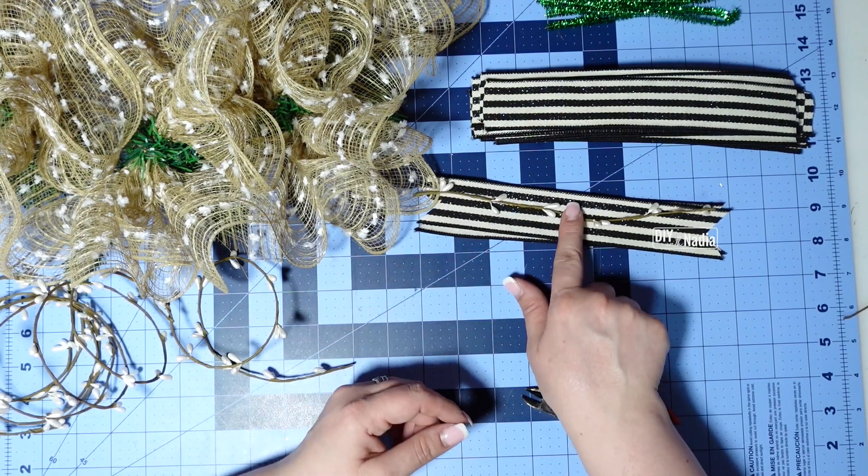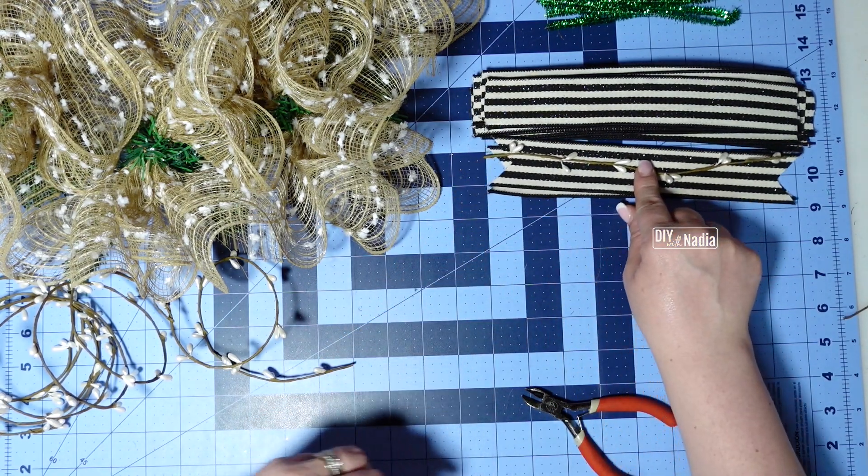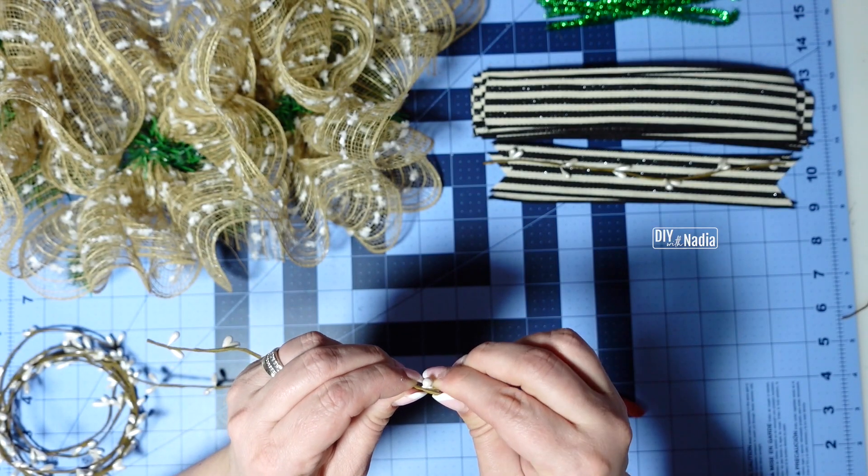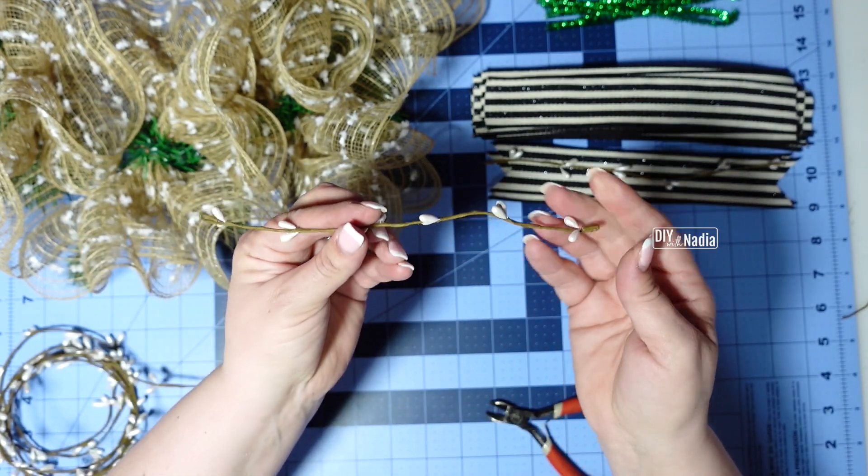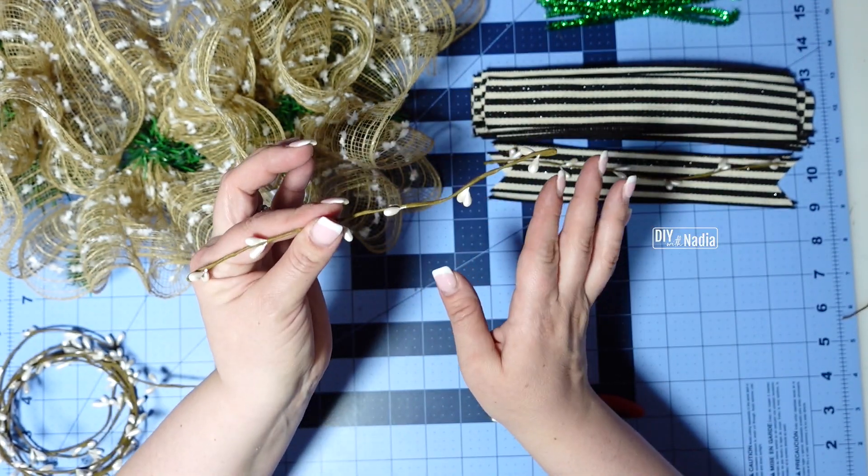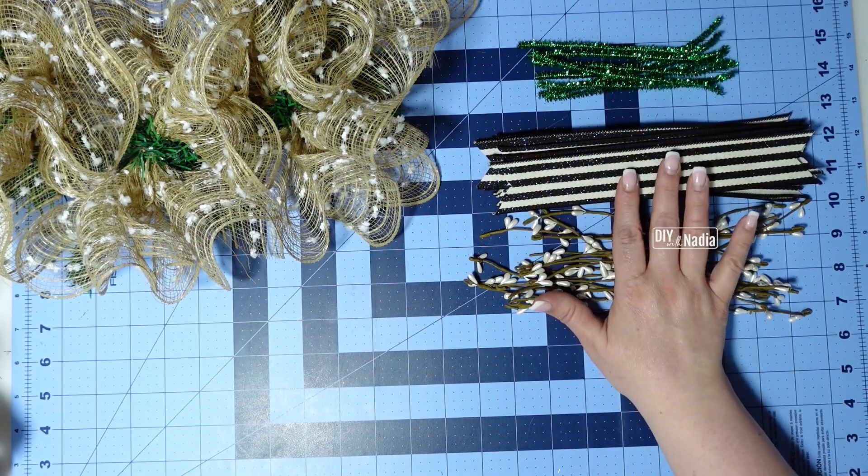And then right here this tip I'm going to go ahead and just fold it back. We're going to put them together along with our striped ribbon and of course both ends we're going to bend. This is going to prevent fraying and these berries are going to stay in place.